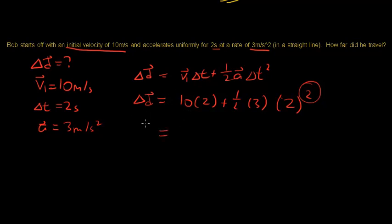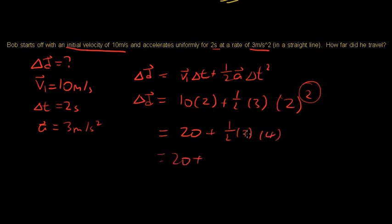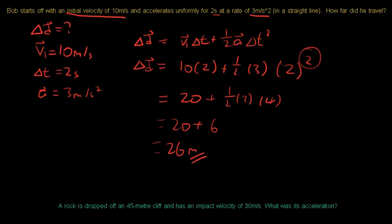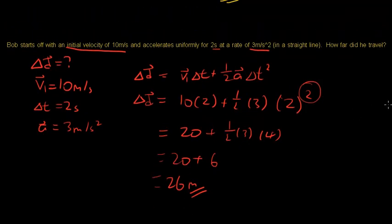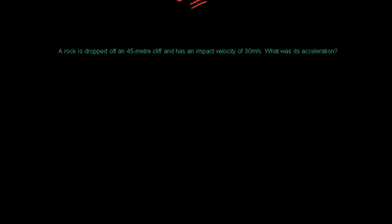Solving: 10 times 2 is 20, plus half times 3 times 4 (which is 2 squared). Half times 3 times 4 equals 6. So displacement equals 20 plus 6 equals 26 meters. That's the displacement for question two.